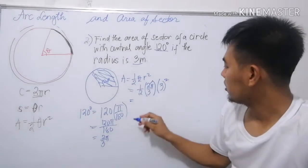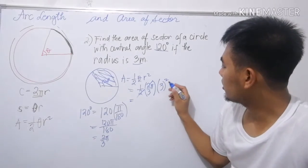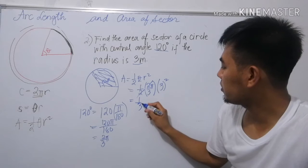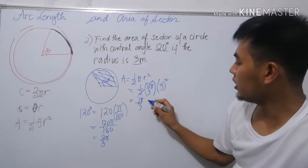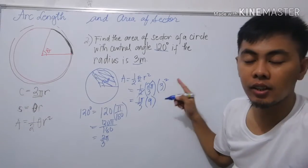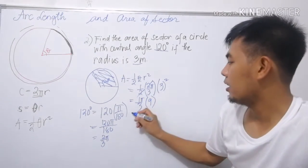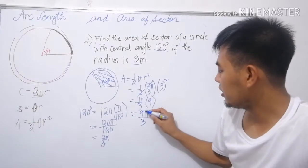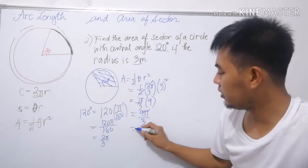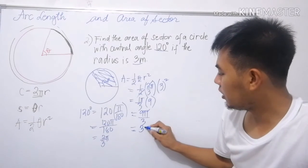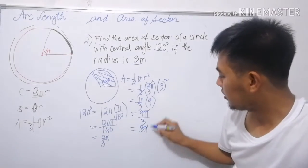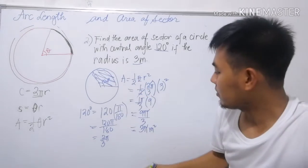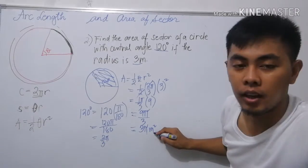Multiplying, 1/2 times π over 3, no sorry, 2π over 3, and r squared, 3 times 3 is 9. We get 9π over 3 times 1/2, which equals 9π over 6, or 3π over 2. The unit now is meters squared.